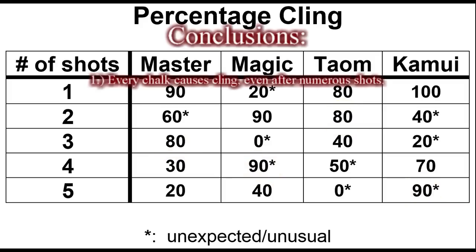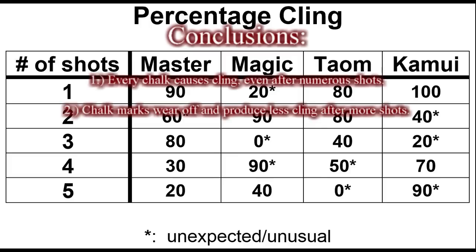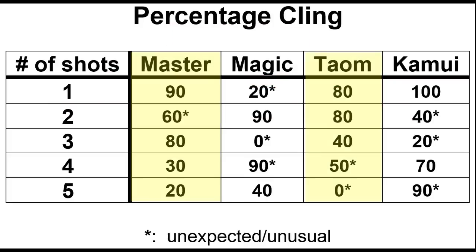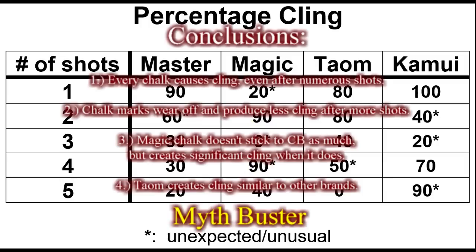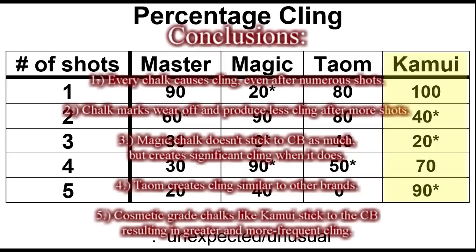Here are some conclusions from the video. All chalk brands resulted in cling, even after numerous shots. Chalk marks on the cue ball wear off and create less cling after more shots. This effect was most consistent and evident with Master and Taeom chalk. Magic chalk doesn't seem to stick to the cue ball as much as some others, but when it does, it results in more cling. The often-heard claim that Taeom chalk results in significantly less cling than other brands is obviously wrong. Cosmetic-grade chalks like Kamui stick to the cue ball more than other brands, resulting in greater and more frequent cling. During a game, a chalk mark is added to the cue ball on every shot, causing the number of marks to grow. Older chalk marks result in less cling, but even a chalk mark five or more shots old can result in cling and a missed shot.